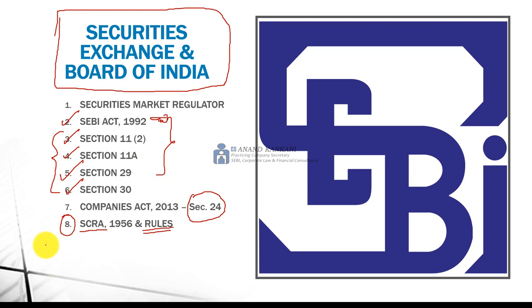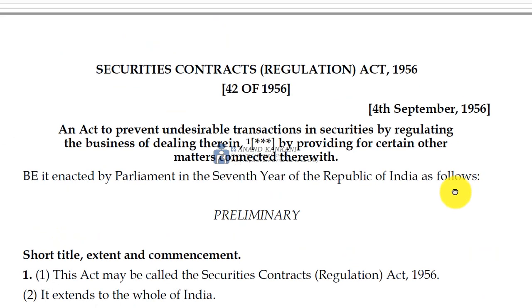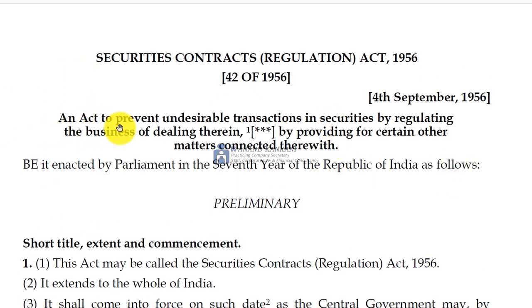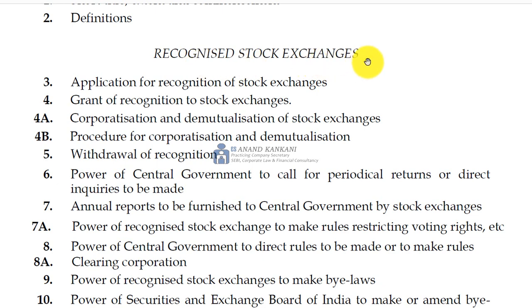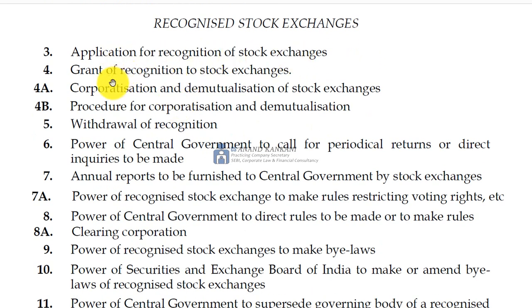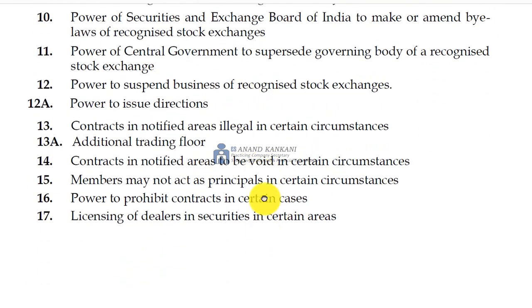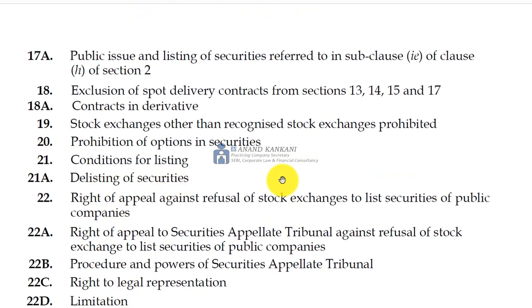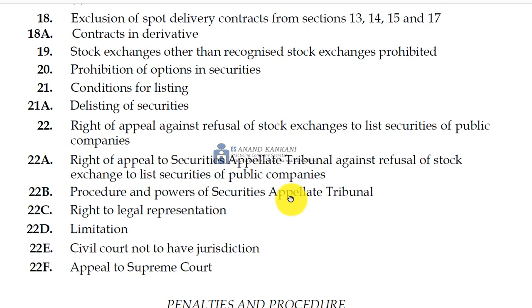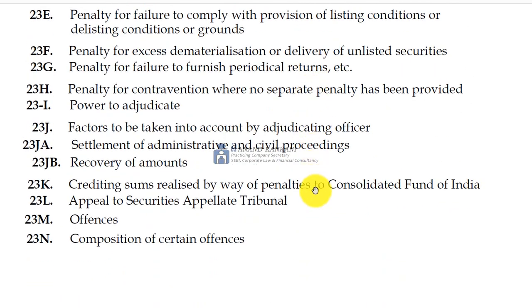Now let's see what is in SCRA 1956 — the Securities Contract Regulation Act. This totally governs the stock exchange. If you check the index, you will find recognition of stock exchanges, how the stock exchanges are going to work, their powers, business — everything is given here. Stock exchanges, delisting of securities, listing of securities, prohibiting certain securities — all these points are given in the Securities Contract Regulation Act. Then we have the Securities Contract Regulation Rules, where minimum public shareholding and promoter contribution — all those things are governed to stay listed on the stock exchange.